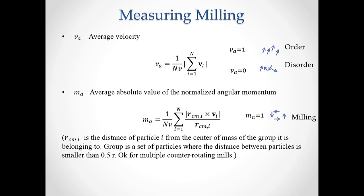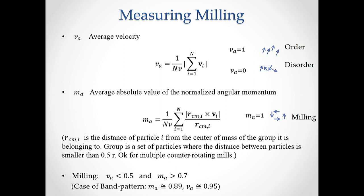Here, R_CM is the distance of particle i from the center of mass of the group it belongs to, and a group is a set of particles where the distance between particles is smaller than half of the interaction range. This works well for identifying also multiple and counter-rotating mills. However, for the band pattern, this angular momentum quantity is actually high. Therefore, it turns out that a good condition for identifying milling is that the average velocity has to be lower than a certain threshold.